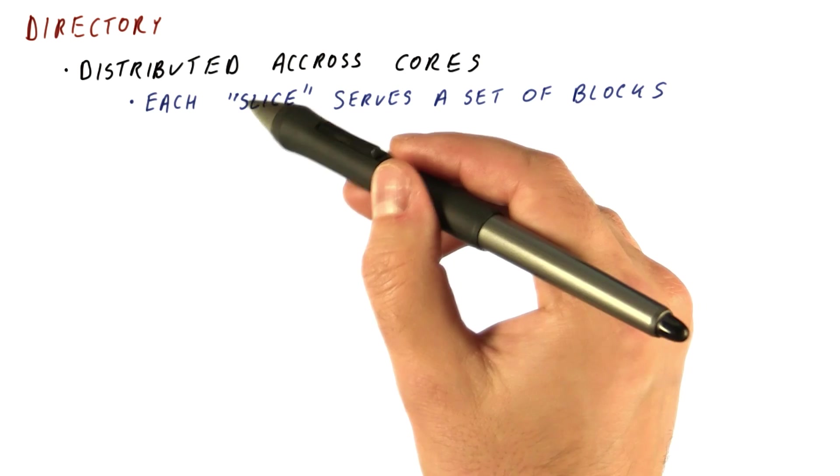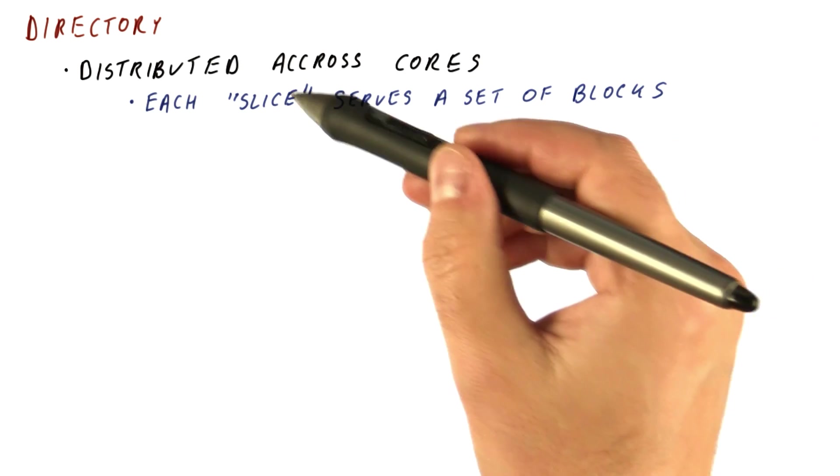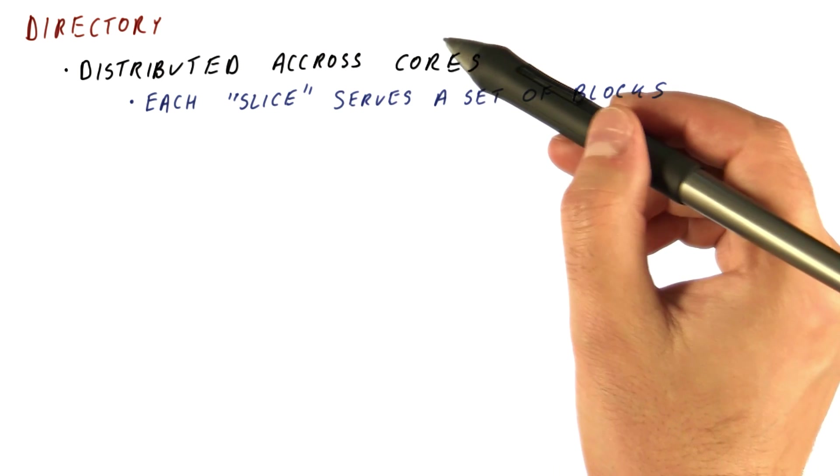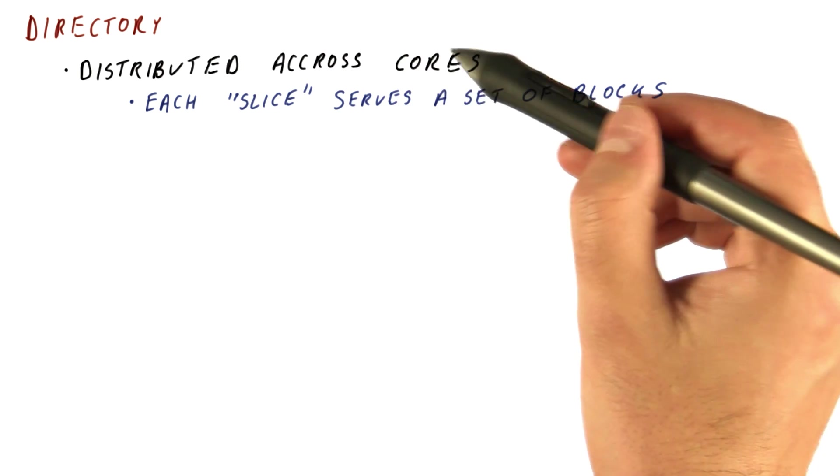Each slice of the directory will serve a set of blocks, where a slice of the directory is the part of the directory that is next to a particular core.